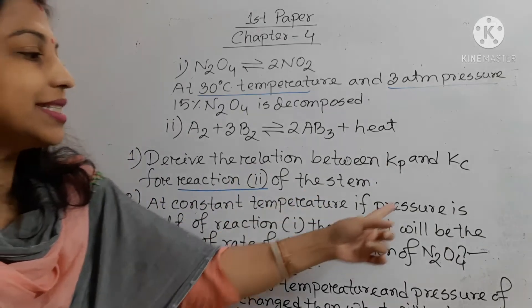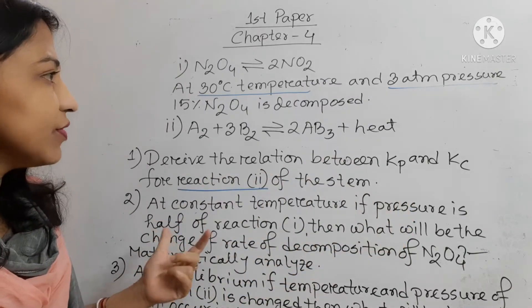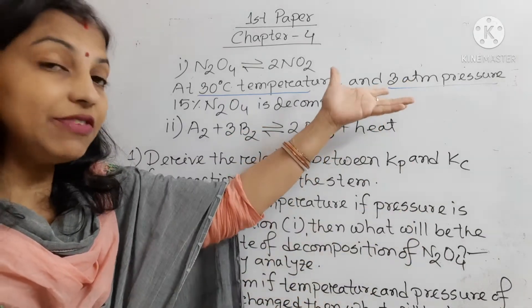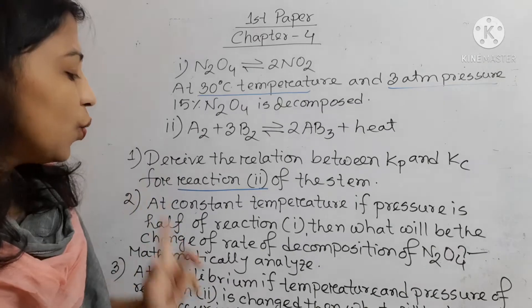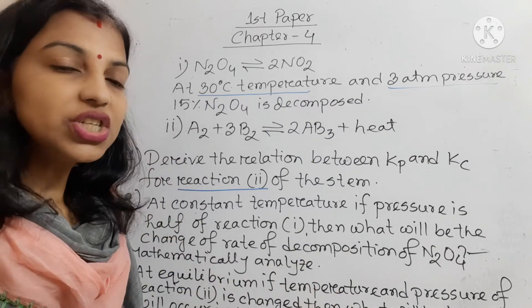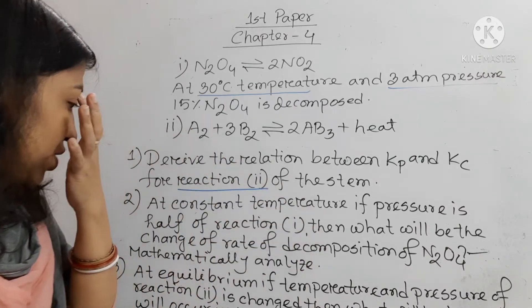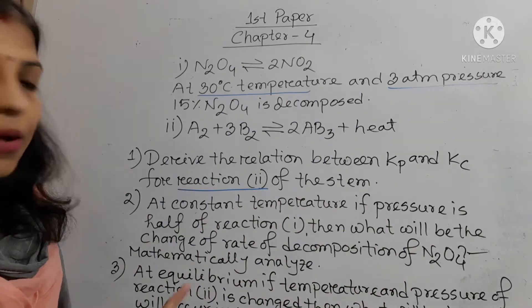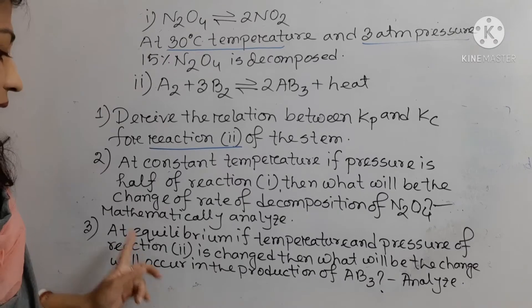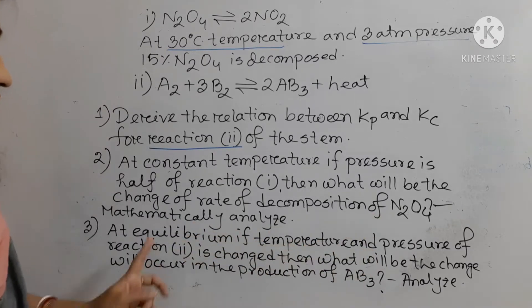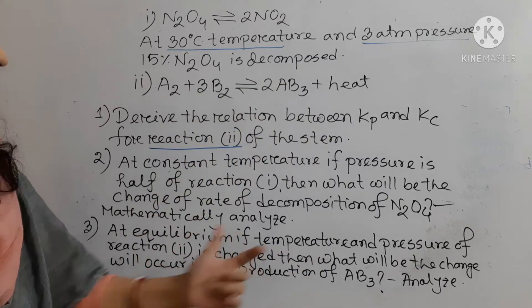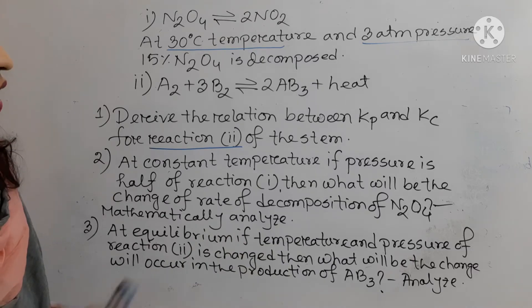Number 2 question: at constant temperature, if pressure is half — students, you have seen that one pressure is given, that is 3 atm — so if pressure is half, that means 1.5 atm, then what will be the change of rate of decomposition of N2O4? Mathematically analyze. Third question: at equilibrium, if temperature and pressure of reaction 2 is changed, then what will be the change in the production of AB3? Analyze.